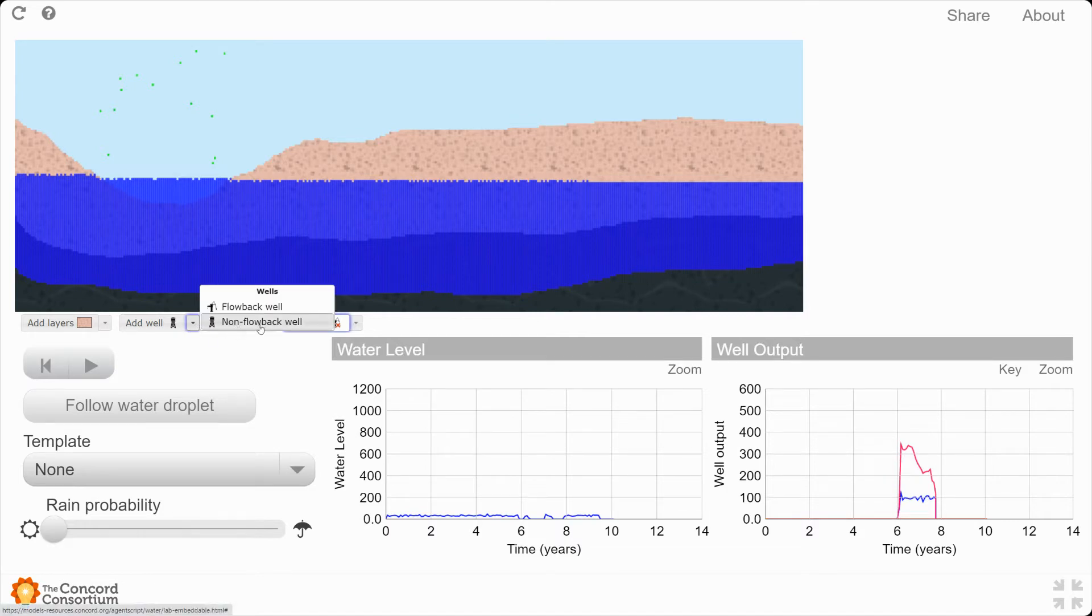We're going to add two non-flowback wells. Non-flowback wells represent the way that we use water in the valley for agriculture or city purposes or household purposes. A flowback well is a more industrial use of a well, used to pump petroleum or oil out of the ground, typically in a process called fracking, where the water is injected into the ground, and then the oil rises to the top and the water comes up with it, but then the water is put directly back onto the ground. We don't do that.